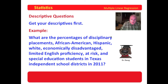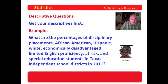You may recognize this question. This question is exactly identical to the descriptive question that we used for factor analysis. We're going to examine disciplinary placements and these other variables from a little bit different perspective. But with descriptive questions, we still need to know what are the values there — what are their means, what are their standard deviations, and how many of them are there for each data point?